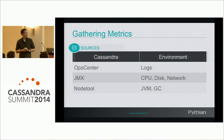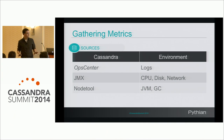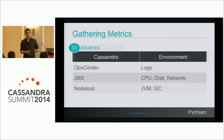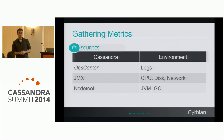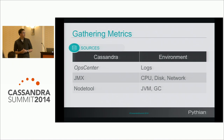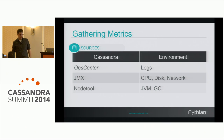There are multiple ways to look at metrics. I'm breaking it down between the Cassandra metrics and the environmental metrics. The Cassandra metrics include JMX metrics, node tool, Ops Center, and similar tools — that's what I'm primarily focusing on. But I'll also give some mention to environmental metrics, in particular logs and kernel-based metrics such as disk, CPU, memory, and network.